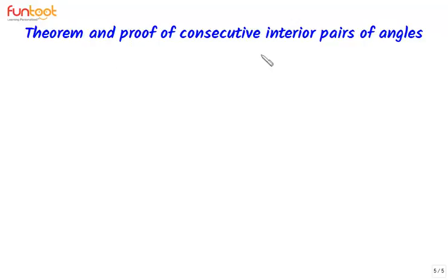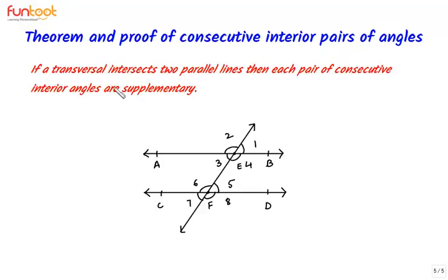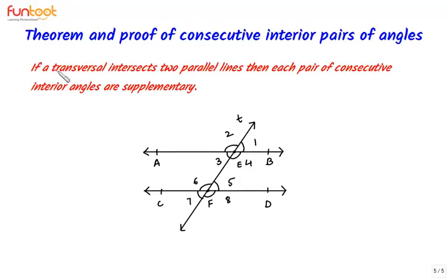Let's do a theorem and proof of consecutive interior pairs of angles. The statement of the theorem is: if a transversal intersects two parallel lines, then each pair of consecutive interior angles are supplementary. Here we have two parallel lines AB and CD intersected by transversal T at points E and F.